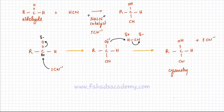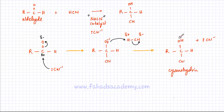A cyanohydrin is a substance which has both a cyanide group and a hydroxy group present in a single compound.